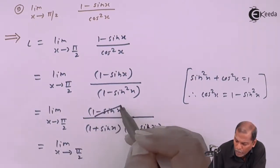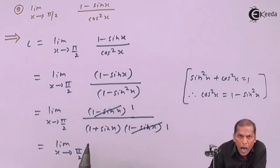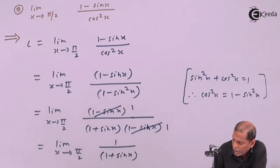Now we cancel the term (1 - sin x) from numerator and denominator. So we're left with 1/(1 + sin x).